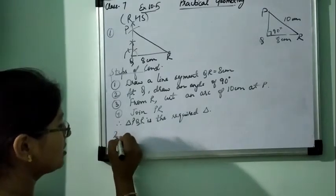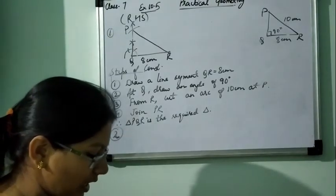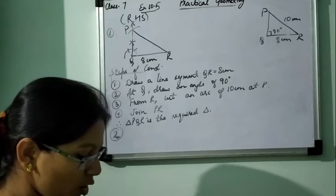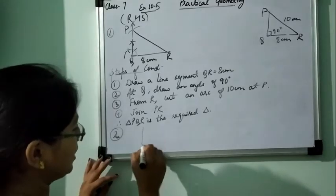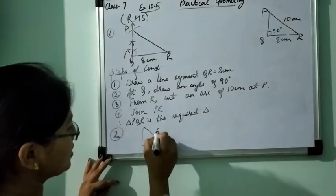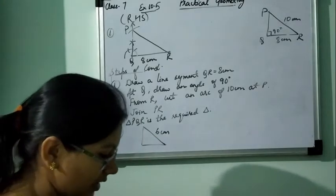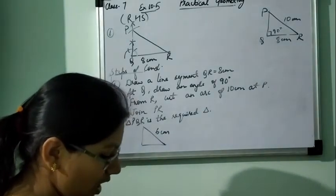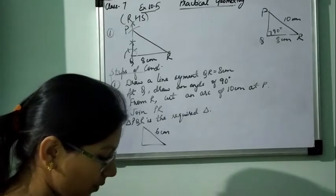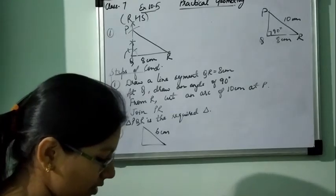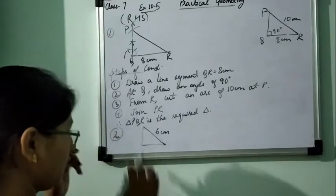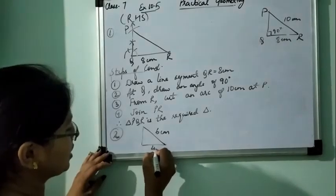So in this way we can do the construction and write down the very simple steps in our own language. Now similarly, just look at question number 2. Construct a right angle triangle whose hypotenuse is 6 cm. And one of the legs is 4 cm.